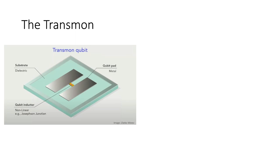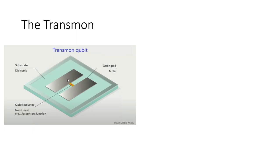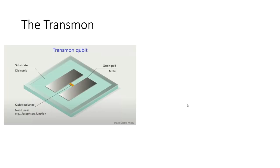First I want to give you a brief intuition of how a transmon works. It looks very simple — this is a schematic of a transmon. You have a metal plate here and a metal plate here, and you cool it down to 15 millikelvin, which is colder than outer space.